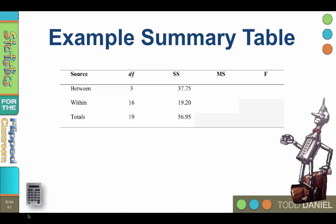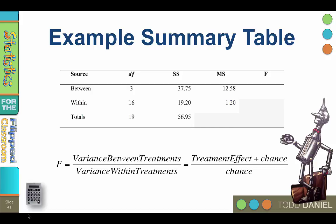So now we need the MS, the mean square, or the average of the sum of squares. To fill in the mean square column, you would divide the sum of squares in each row by its degrees of freedom. So therefore, the mean square between would be 37.75 divided by 3, 12.58. The mean square within is 19.20 divided by 16, or 1.20.